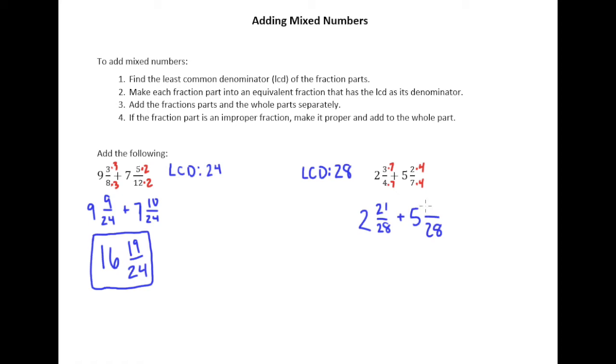So we have 2 and 21 twenty-eighths, and then 5 and 8 twenty-eighths. And so we add these together, 2 plus 5 is 7, 21 plus 8 is 29.